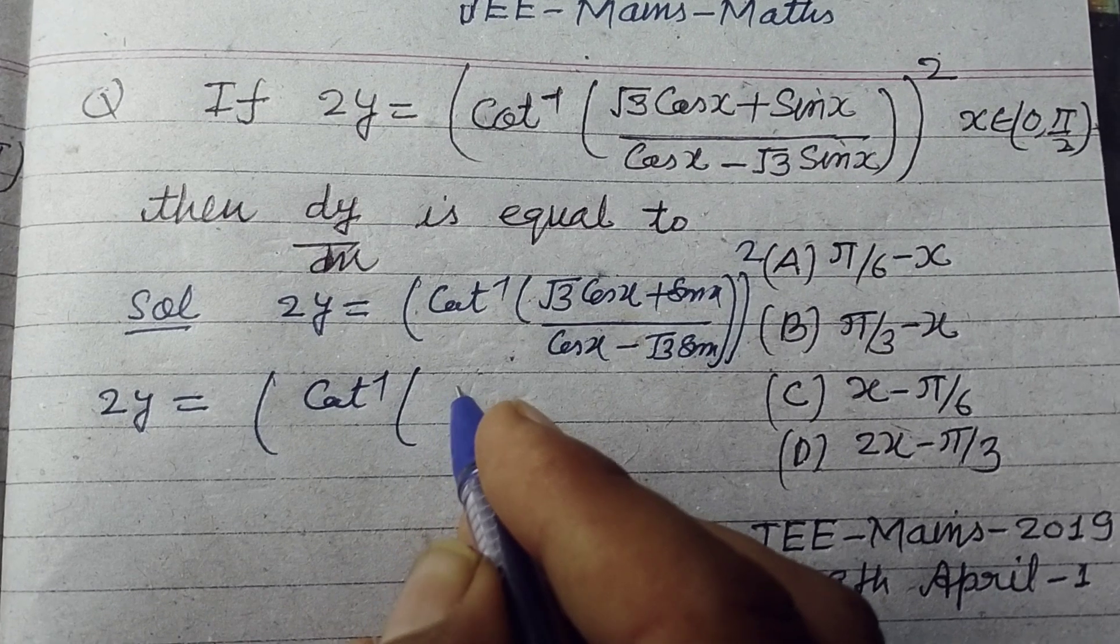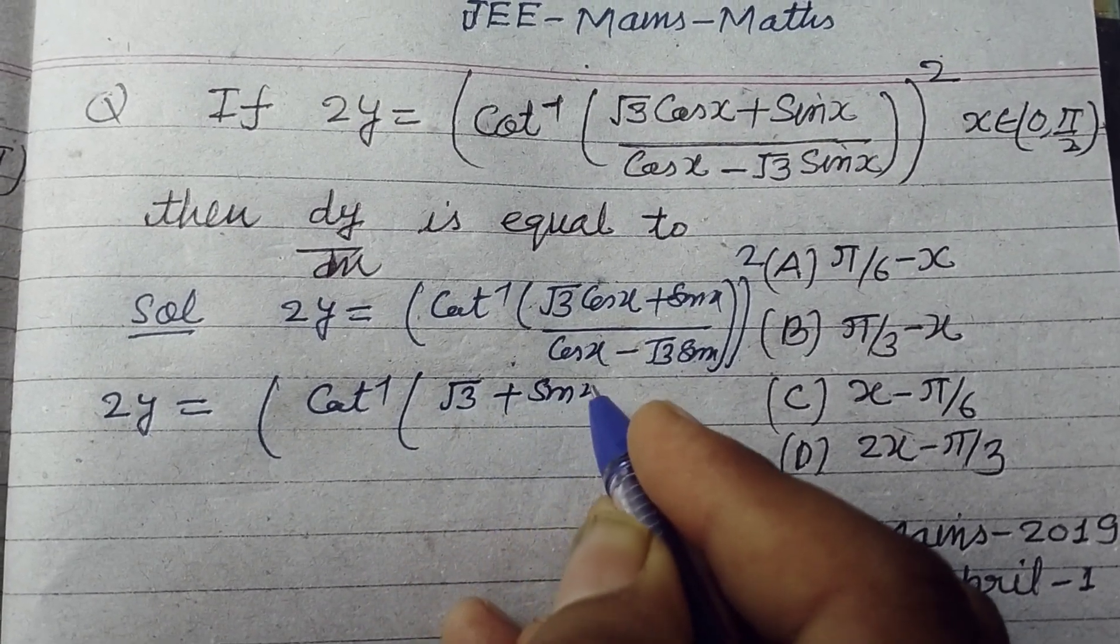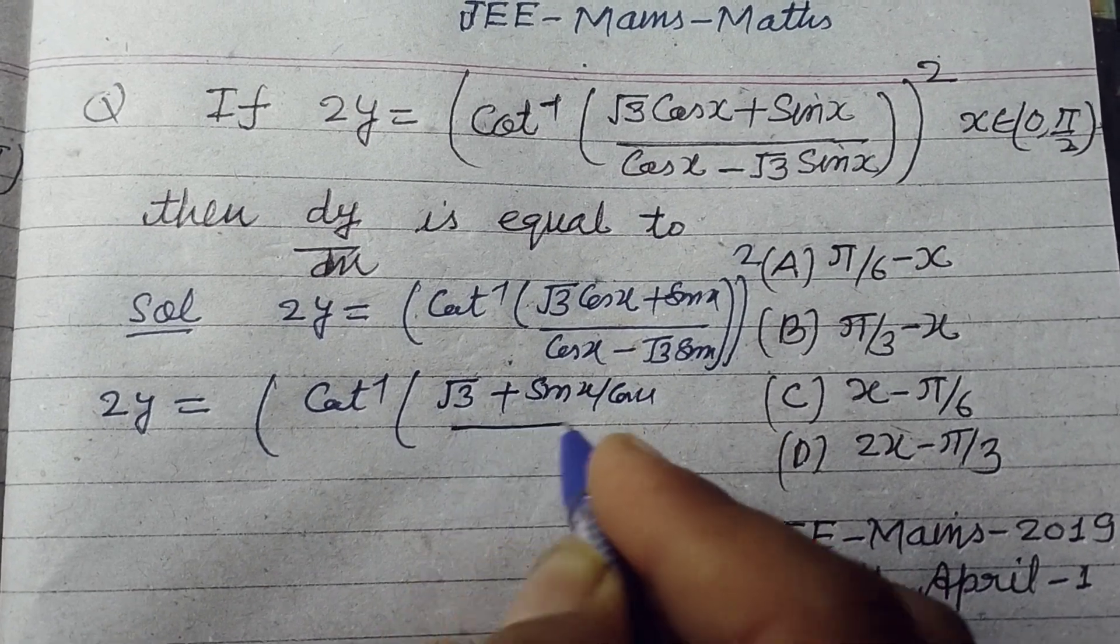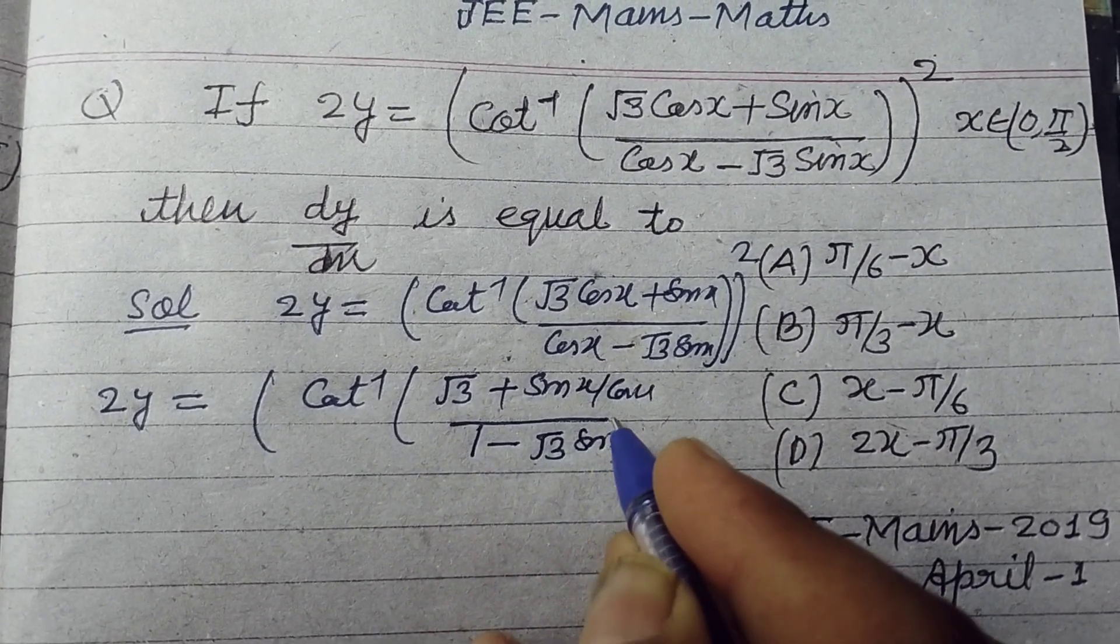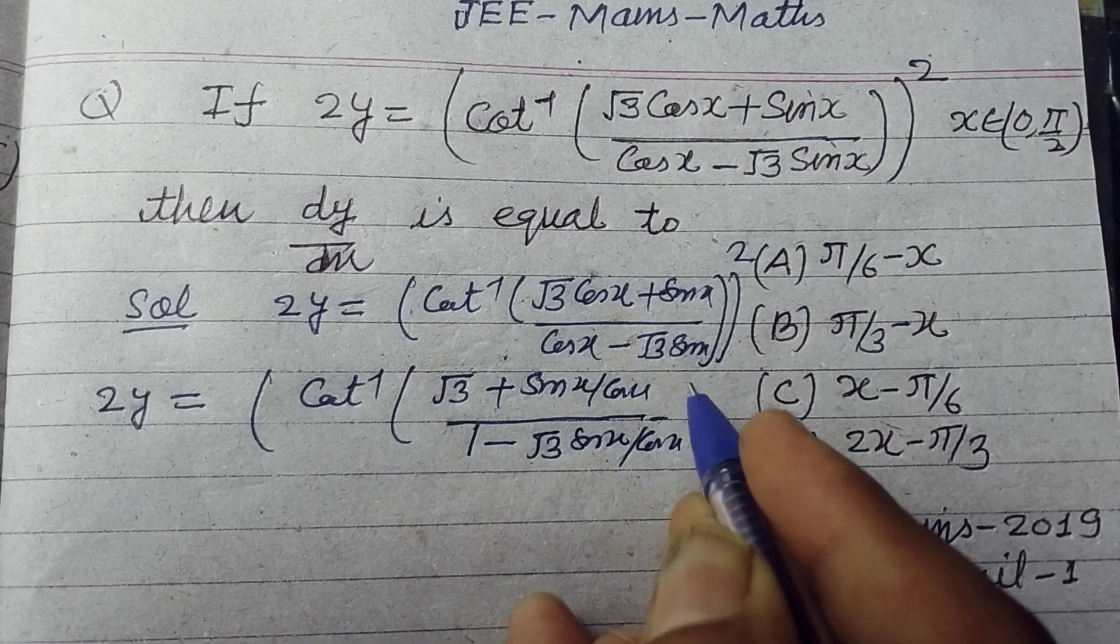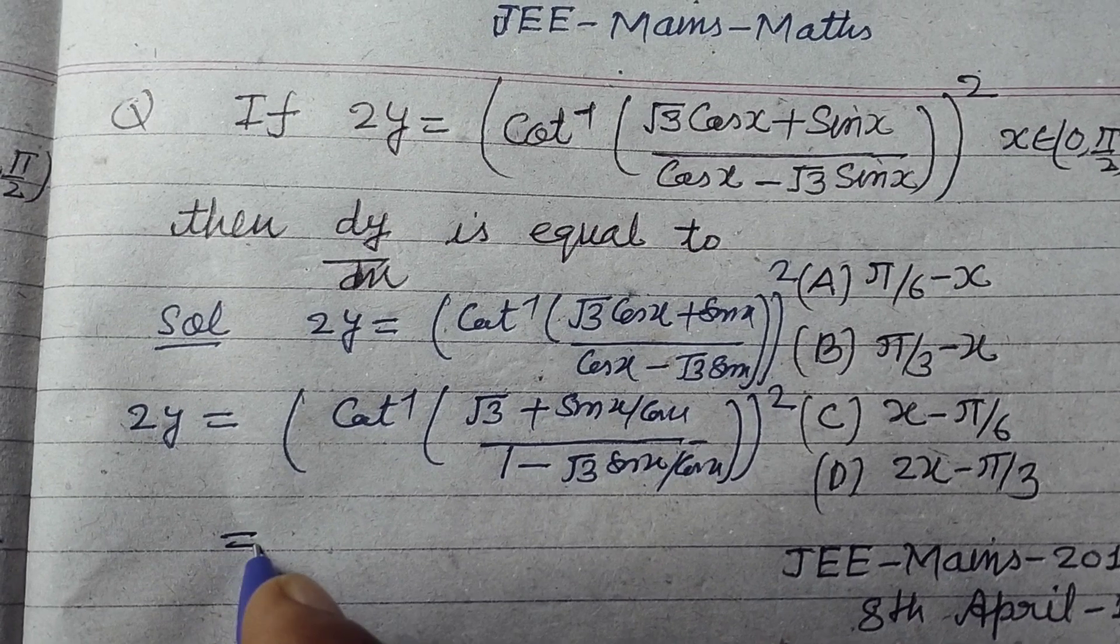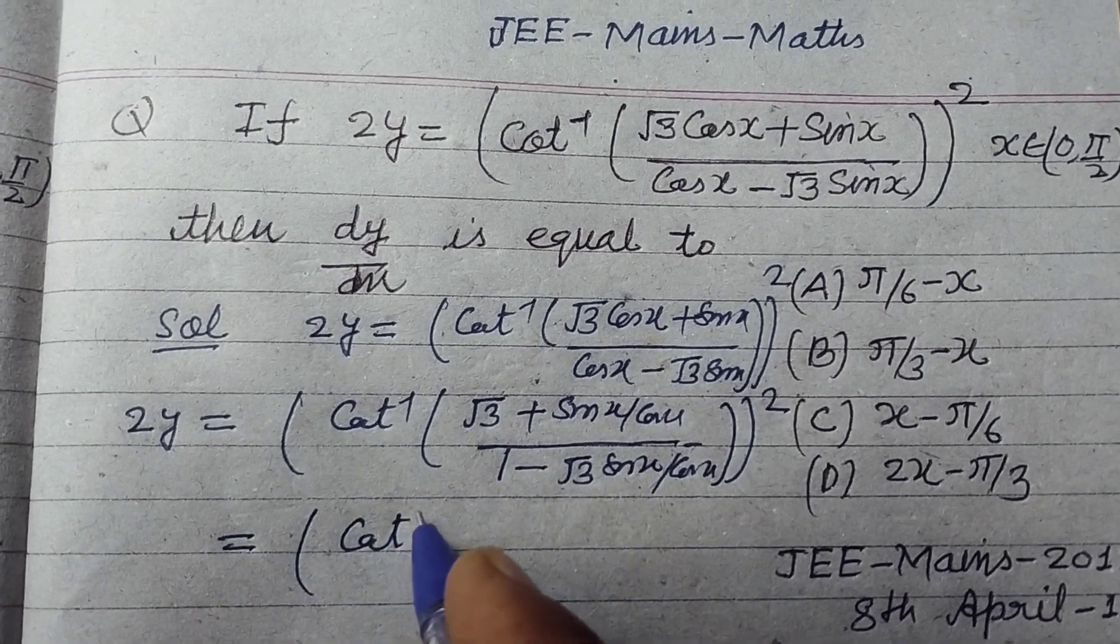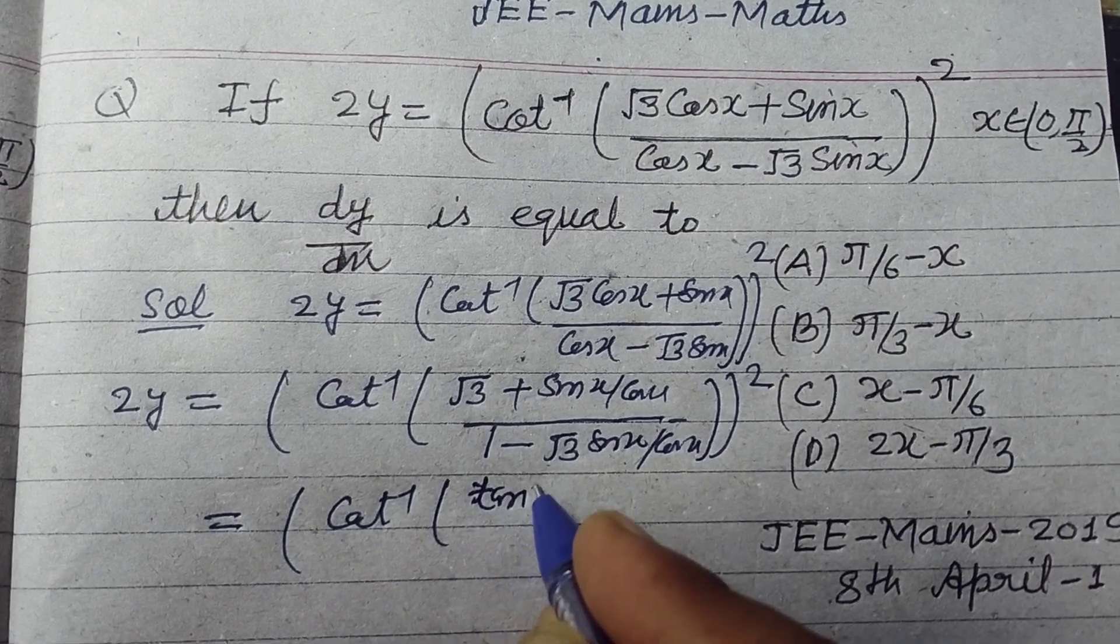Cot inverse √3 has the value tan π/3, and this becomes tan x over 1 minus tan π/3 tan x, whole square.